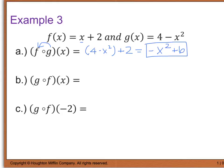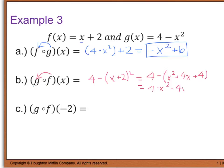Now for part B, where I have g of f of x, that means I'm going to plug f into my g function. So I have 4 minus (x plus 2) squared. To simplify this, I have 4 minus — when I square x plus 2, I end up with x squared plus 4x plus 4. So when I distribute the negative, I end up with 4 minus x squared minus 4x minus 4. The positive 4 and negative 4 cancel, leaving us with negative x squared minus 4x.